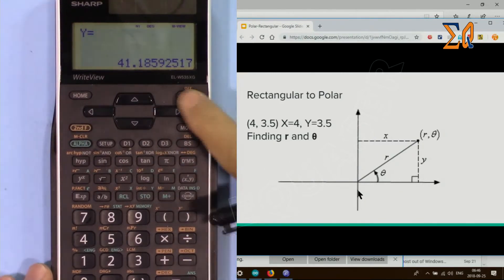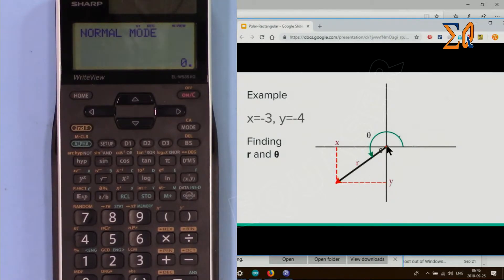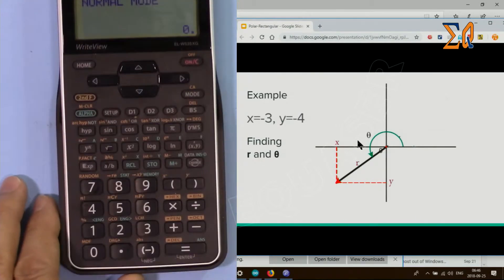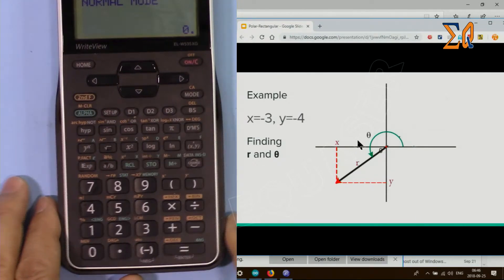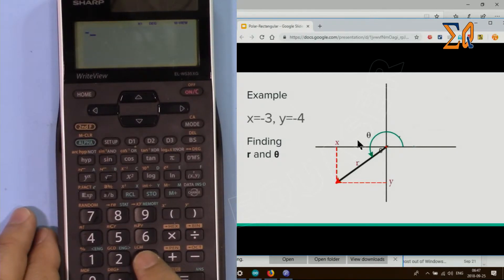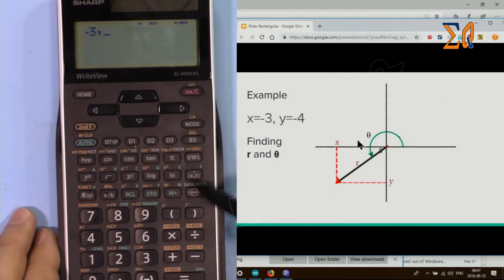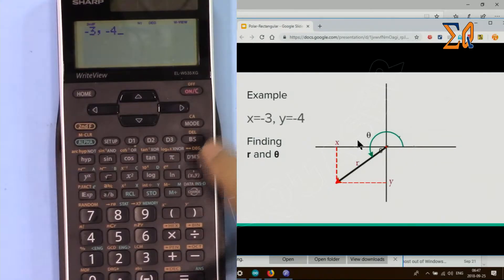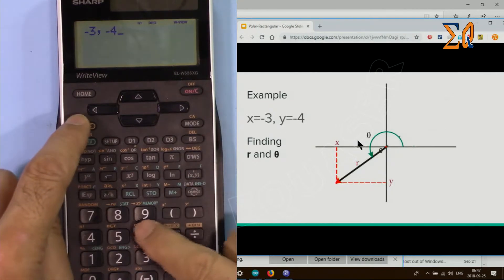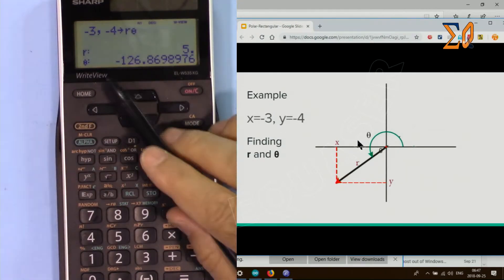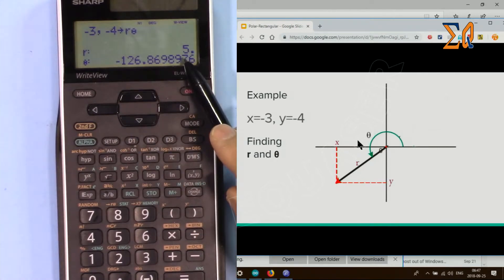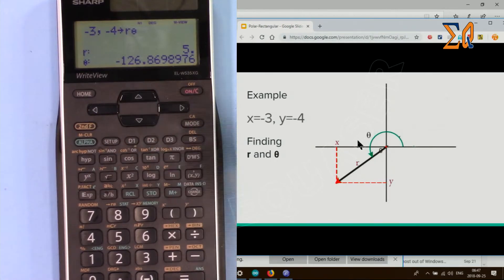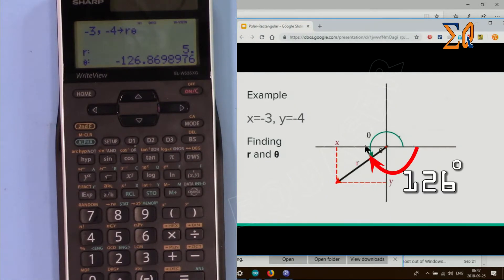Now in this case, X is minus 3 and Y is minus 4, so the point is here. We want to find R and theta. Make sure to press the minus at the bottom: minus 3, comma, then minus 4. Press second function and 8. We got R equals 5 and theta equals minus 126°.